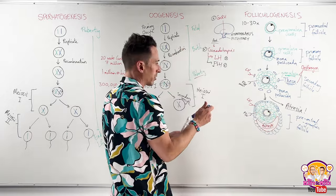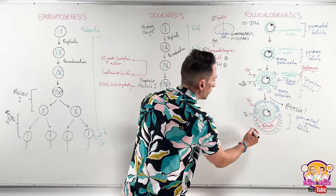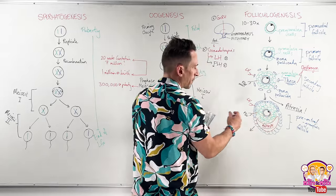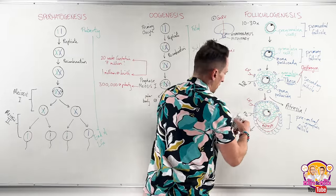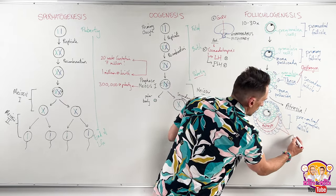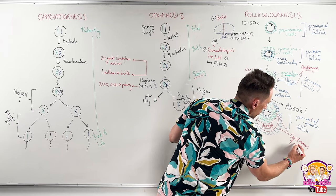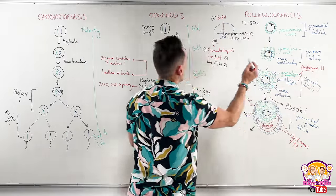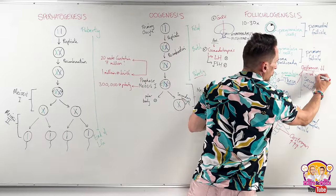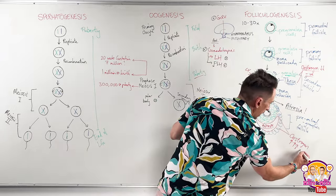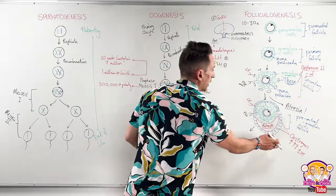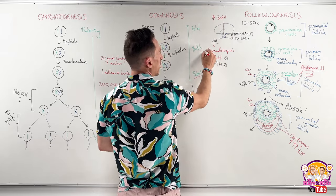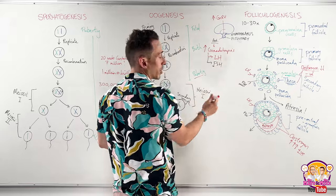This selected follicle — called the Graafian or mature follicle — has so many granulosa and theca cells that it starts producing huge amounts of estrogen. When estrogen is low, it causes negative feedback. But when estrogen is pumped really high, it results in positive feedback — for reasons we don't fully understand — which tells the hypothalamus to release more GnRH, stimulating the anterior pituitary to release a surge of LH and FSH. It is now the luteinizing hormone surge that matters.